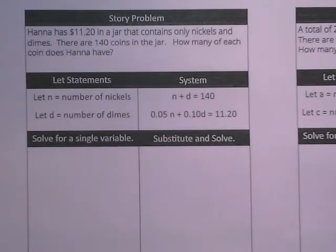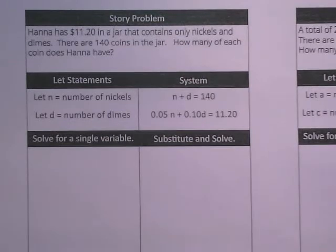Okay, so Hannah has $11.20 in a jar that contains only nickels and dimes. There are 140 coins in the jar. How many of each coin does Hannah have?